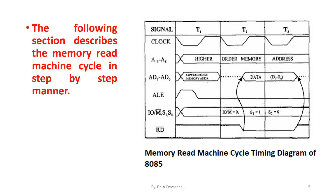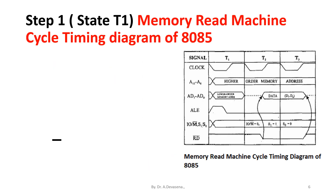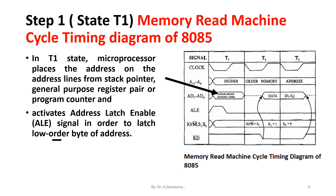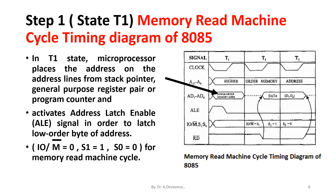The following section describes the memory read machine cycle in a step-by-step manner. Step one, T1 state: the microprocessor places the address on the address lines from the stack pointer, general purpose register pair, or program counter, and activates the ALE signal in order to latch the low-order byte of the address. During T1 state, ALE is activated, as indicated here.